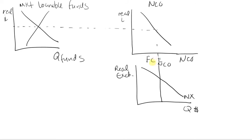If there is capital flight — where capital is flowing outside of the country — this could be due to political instability or some phenomenon causing people to rapidly take their money or capital investments out of the country. That is going to shift NCO to the right.